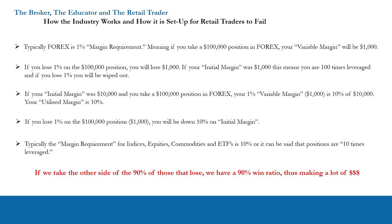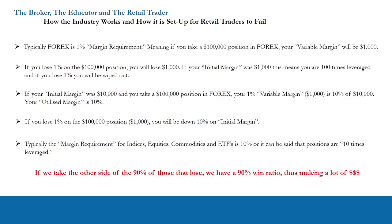Typically in Forex, which is a very popular asset class for retail traders, you are allowed to borrow up to 100 times what you put in your account. That's 1% variable margin, which means if you lose 1%, it goes to zero. So if you put $1,000 in your account, you'd be allowed to take up to $100,000 of risk in the currency pair you're buying or shorting. And if you lose 1%, you're gone.